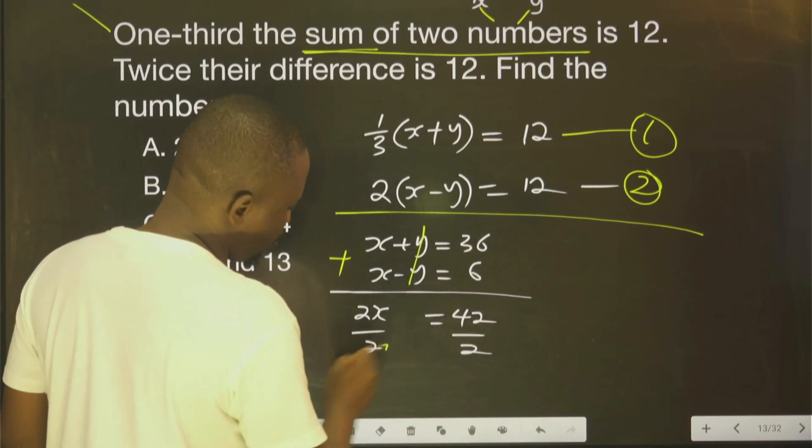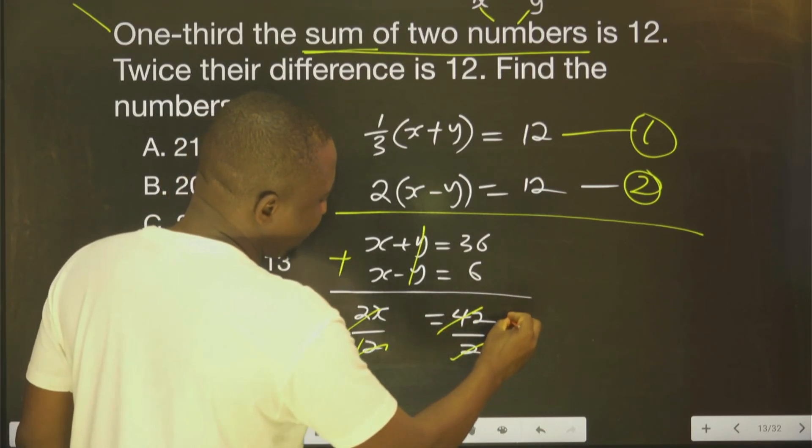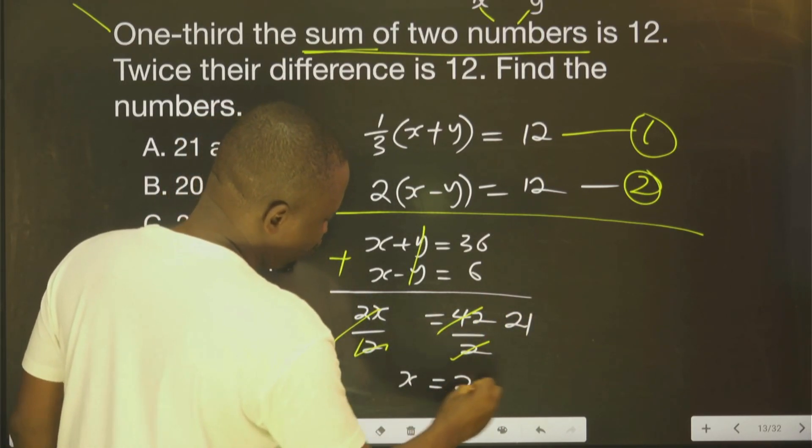If you divide both sides by 2, you're going to have 21. S therefore is 21.